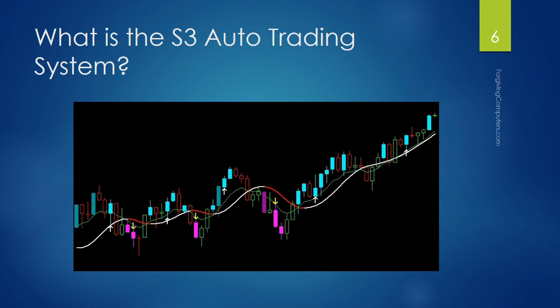What is the S3 Auto Trading System? This graphic here shows a visual of the S3 trading system. You'll notice it has cyan bars and magenta bars. The cyan and magenta bars meet a certain set of rules — that's the preliminary rules for S3. The white arrows and yellow arrows are a refined set of rules that increase the probability of a successful trade. I'll go through these rules and how the arrows and colors work in the next few slides.